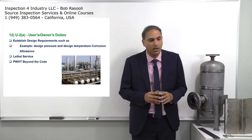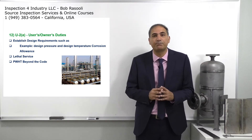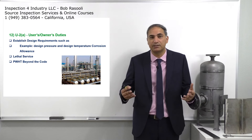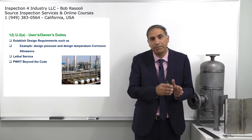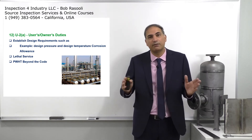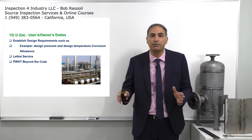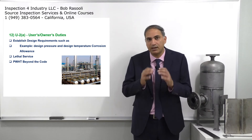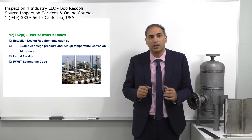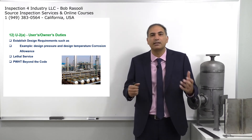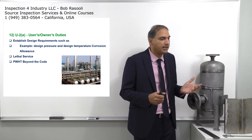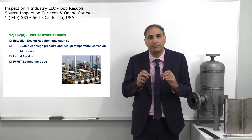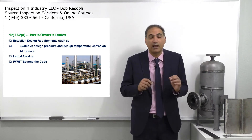Regarding PWHT beyond the code: based on ASME Section 8 Division 1, the requirement for post weld heat treatment is determined by the combination of material type and wall thickness. For some materials it is mandatory regardless of wall thickness; for others it becomes required after a certain wall thickness. But sometimes it is a service requirement — for example, caustic stress corrosion cracking: if the vessel contains caustic material, even if wall thickness does not trigger a code requirement for carbon steel, skipping PWHT can cause cracking in the heat affected zone.